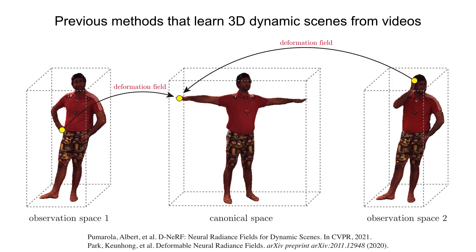NeRF has proposed a representation that can be efficiently learned from images with a differentiable renderer. To handle dynamic scenes, recent methods decompose a video into a canonical NeRF and a set of deformation fields that transform observation space points at each video frame to the canonical space.